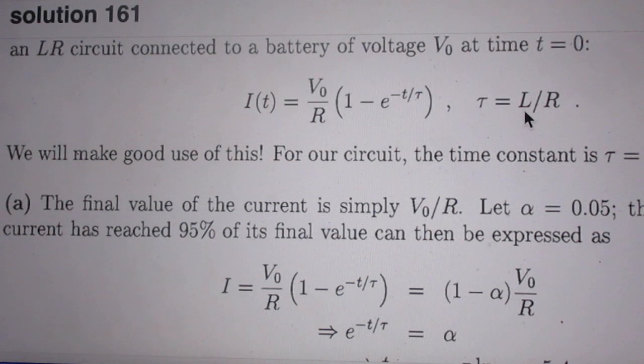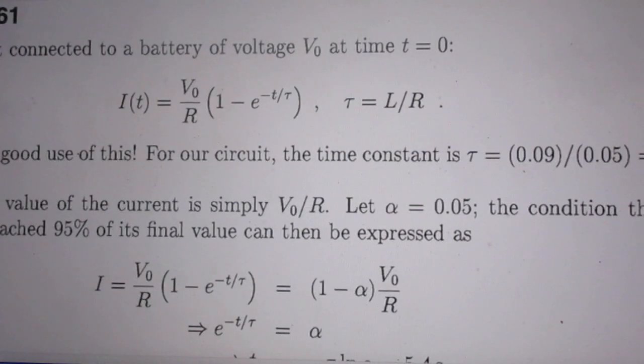L is 0.09 Henry. R is 0.05 ohms. So tau is 1.8 seconds.